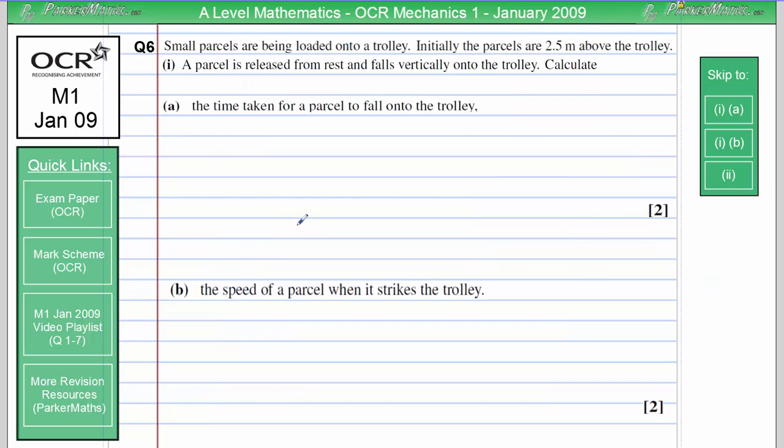Question 6. Small parcels are being loaded onto a trolley. Initially, the parcels are 2.5 metres above the trolley. Part 1 says a parcel is released from rest and falls vertically onto the trolley. And we need to calculate, in part A, the time taken for a parcel to fall onto the trolley.